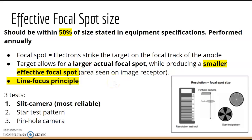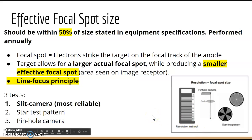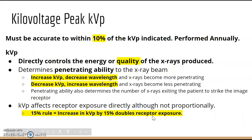The actual focal spot is larger than the effective focal spot — review the line focus principle. To test for focal spot size there are three main tests: the slit camera, which is the most reliable, the star test pattern, and the pinhole camera. For kVp, it must be accurate within 10% — meaning if you set 100 kVp on the control panel, what the tube actually produces must be within 10 kVp.